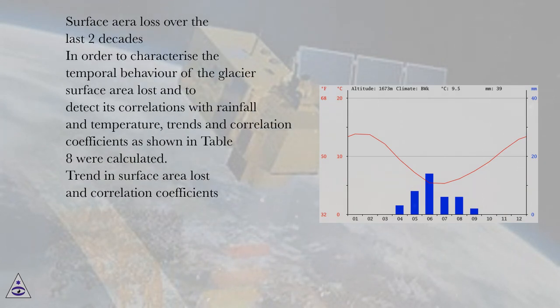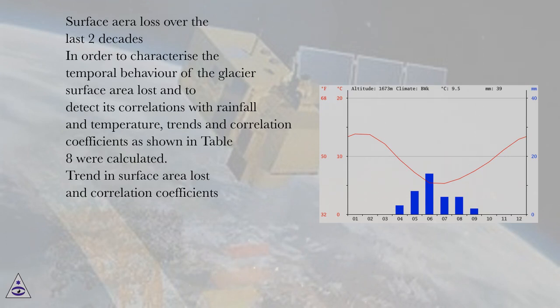In order to characterize the temporal behavior of glacier surface area loss and to detect its correlations with rainfall and temperature, trends and correlation coefficients as shown in Table 8 were calculated.